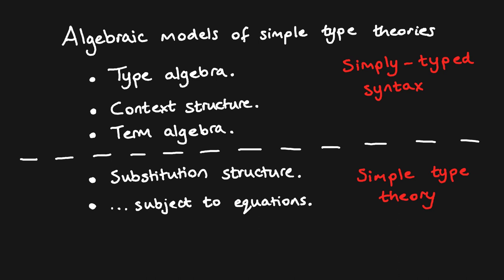We've now briefly looked at the structure required of our models of simple type theory. As with the conceptual distinction between syntax and type theory for signatures and presentations, we also have a corresponding distinction between models of simply type syntax and models of simple type theories. Only models of simple type theories are required to have a substitution structure and potentially satisfy equations on types and terms. Note that I haven't discussed homomorphisms of models here, though they play an important role. Defining the homomorphisms turns out to be quite technical, as we have to account for homomorphisms between polynomial algebras for polynomial functors defined on different presheaf categories, but for details I refer you to our paper.